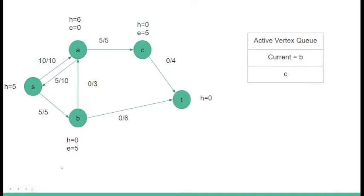Now we will look at node B. B has an excess of five, so we will send five of the flow in B to our sink. We must also relabel the height at B to be one in order to send it to the sink. We now have an excess of zero in B, so it can also be removed from the active vertex set.